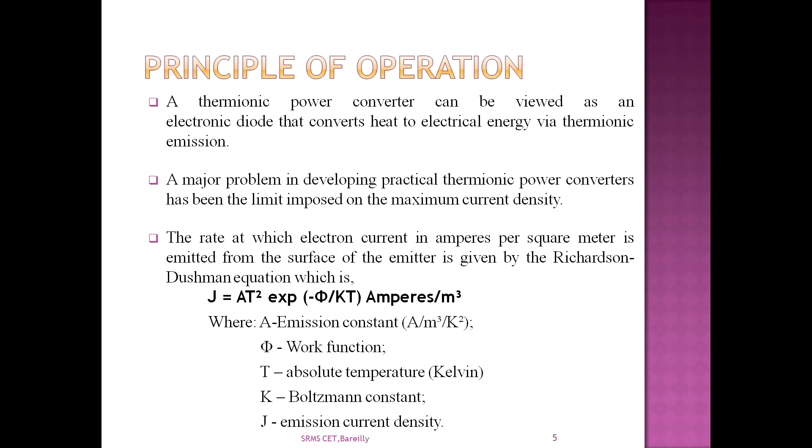Some electrons within the emitter have an energy greater than the work function and they can escape. The emitter has an energy greater than the work function and it is proportionally dependent on the temperature. The rate at which electron current in amps per square meter is emitted from the surface of the emitter is given by the Richardson-Dushman equation, which is J = AT² exp(-Φ/kT) amps per meter squared, where T is the absolute temperature in Kelvin of the emitter, e is the electronic charge in coulombs, k is the Boltzmann constant in joules per Kelvin, and A is also characteristic of emitter material. This expression for emission current is named for Owen William Richardson and Saul Dushman who did great work on this phenomena.